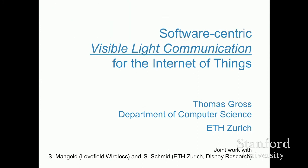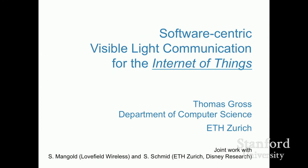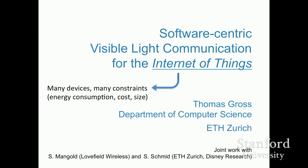Visible light communication means using the visible part of the spectrum — visible to humans, from red to violet. Internet of Things means there are many devices, usually with constraints such as energy consumption, space, or cost.